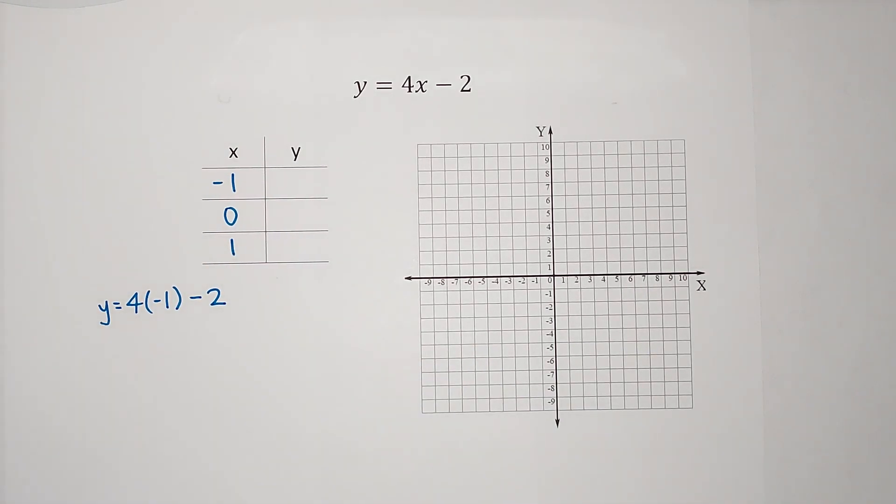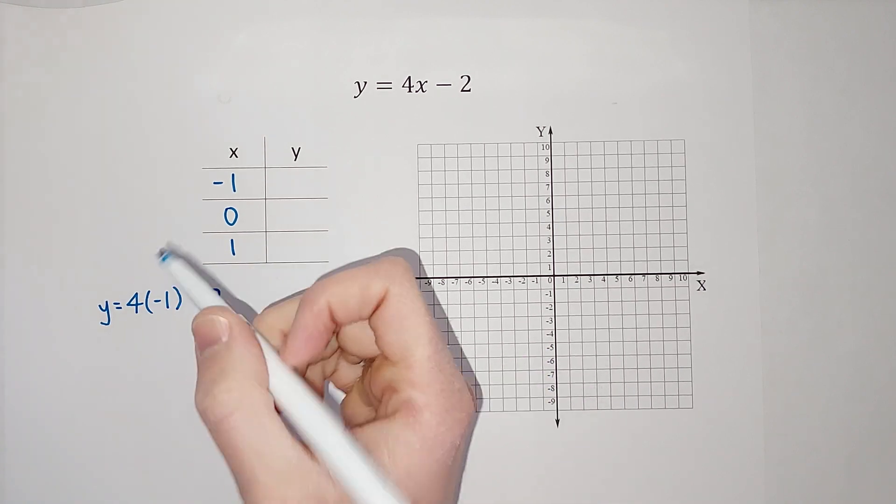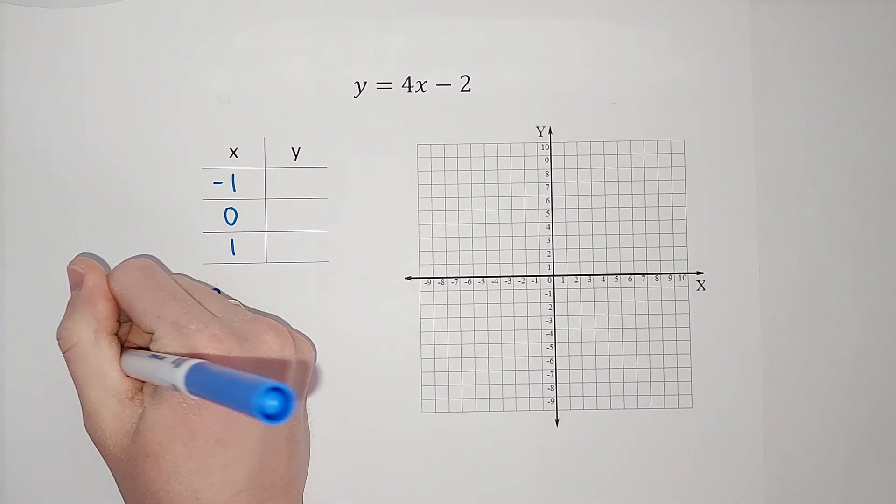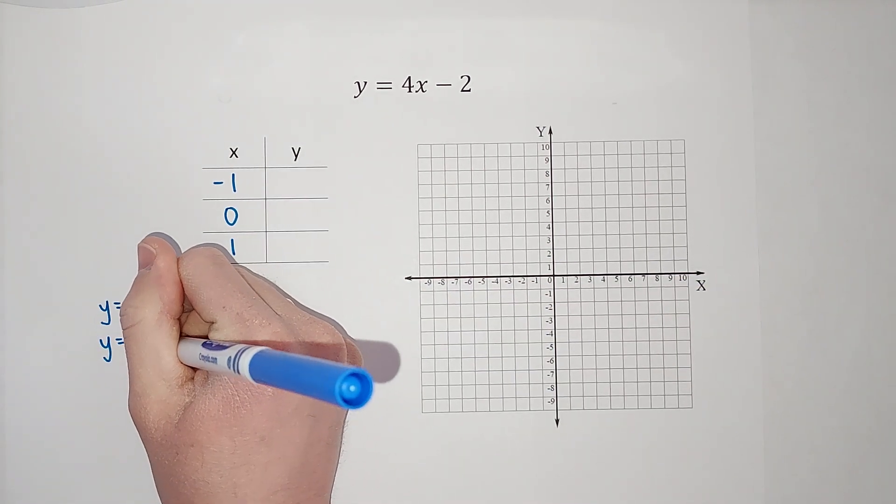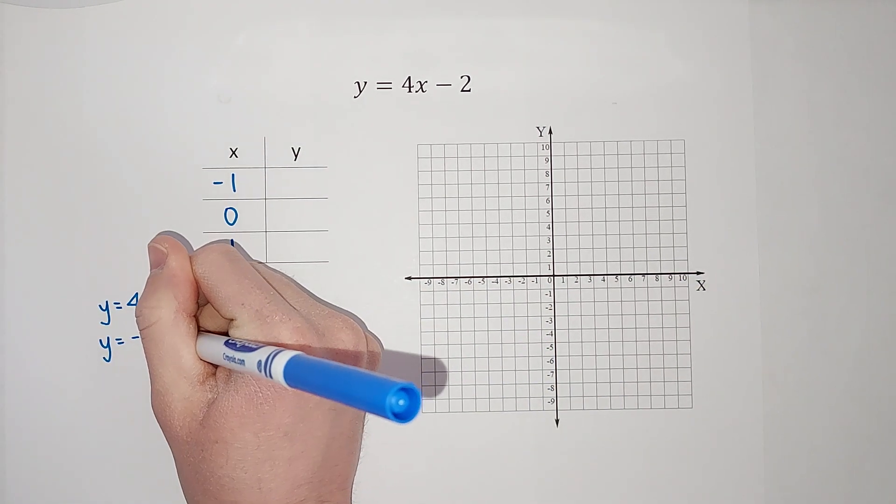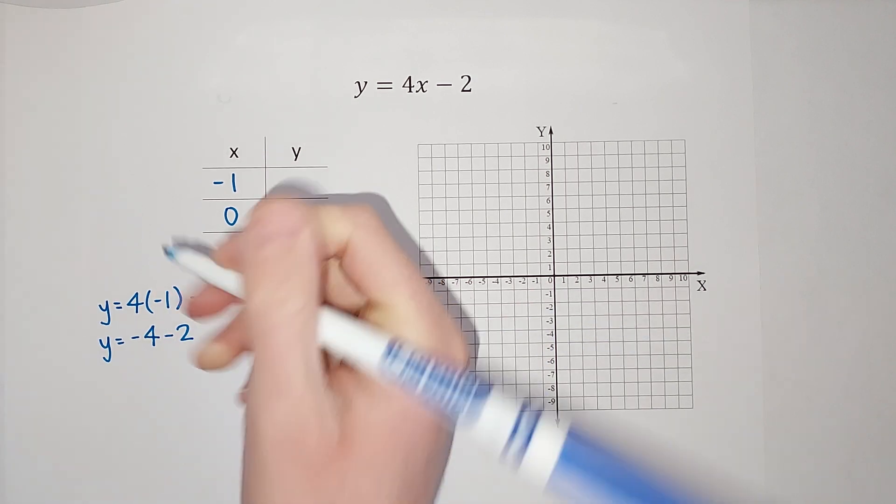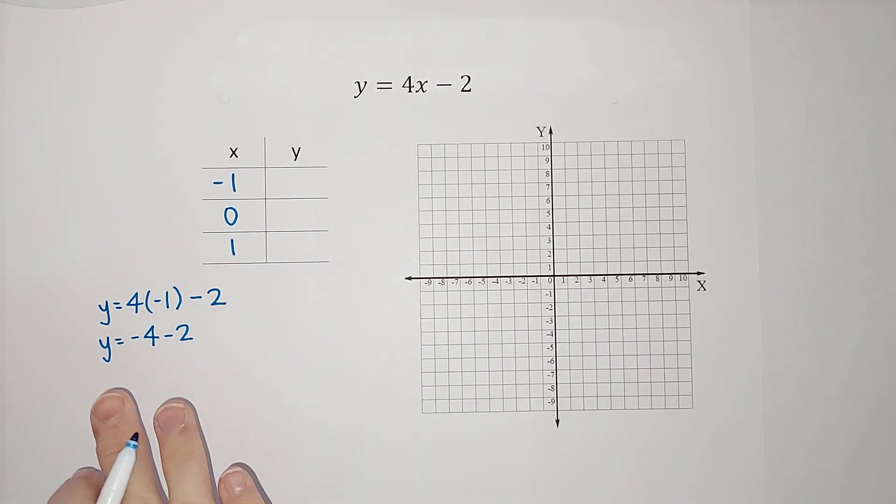So it's 4 times negative 1 and then minus 2. When we solve these, we follow order of operations. So we're going to multiply first. So I get y equals 4 times negative 1 is going to give me negative 4. And then we still have the minus 2. Negative 4 minus 2.